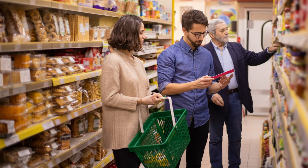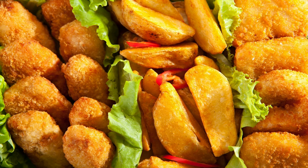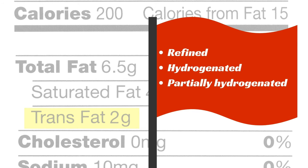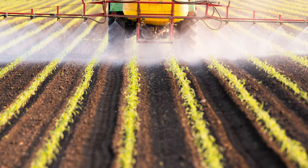Be aware that partially hydrogenated oils can be an ingredient in many foods such as baked goods, crackers, biscuits, pies, packaged snacks, coffee creamers, frosting, dairy-free cheeses, microwave popcorn, commercially fried foods, and restaurant and street foods. Always read food labels and carefully look for red flag terms such as refined, hydrogenated, and partially hydrogenated, so you can make trans-fat-free choices for yourself and your family.